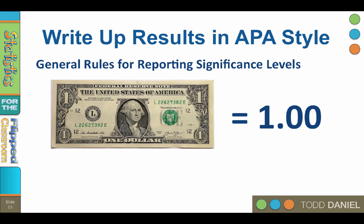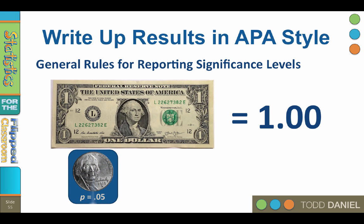Because the most common level of significance is 0.05, especially in scientific research, think of 0.05 as 5% or a nickel. When you interpret p-values, look at the first two decimals and think of them as change. Are they less than a nickel? If so, they are statistically significant.